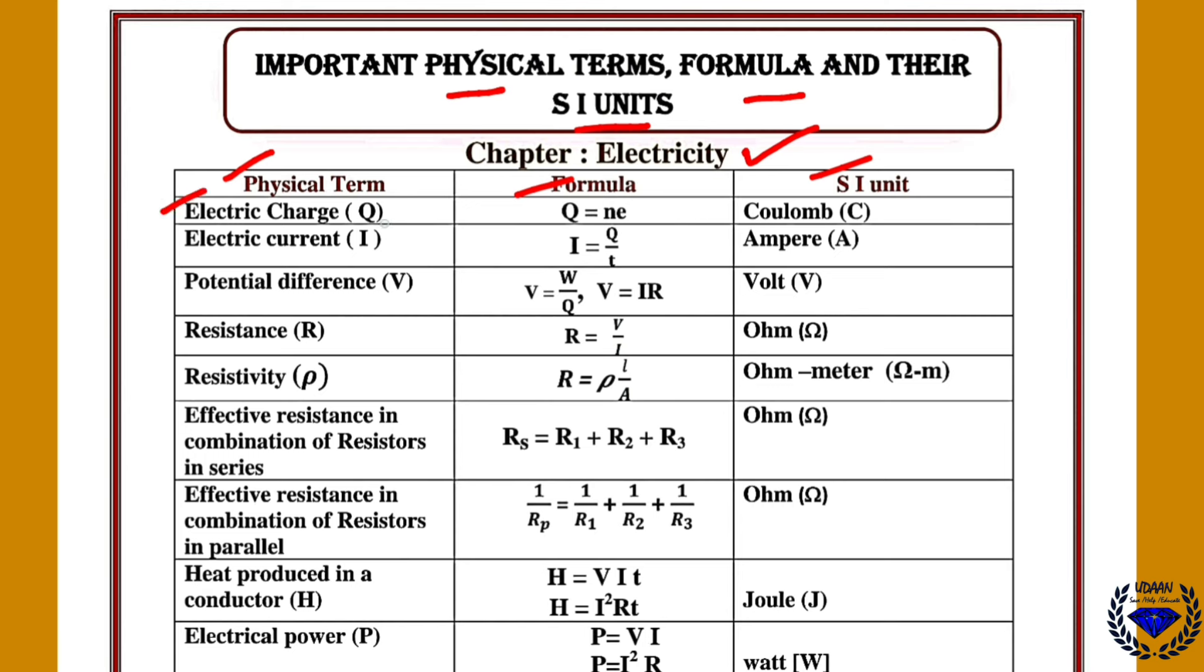See here electric charge denoted Q. Q means N into E. N is number of electrons. E is charge of electron. So electric charge SI unit is Coulomb.